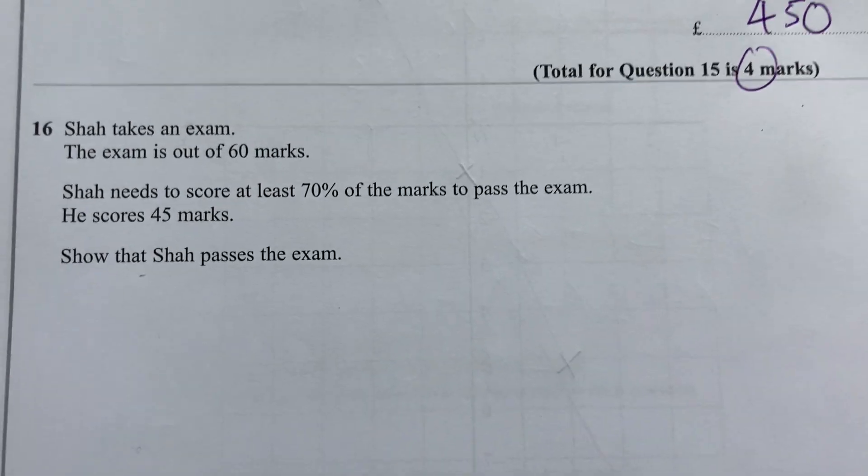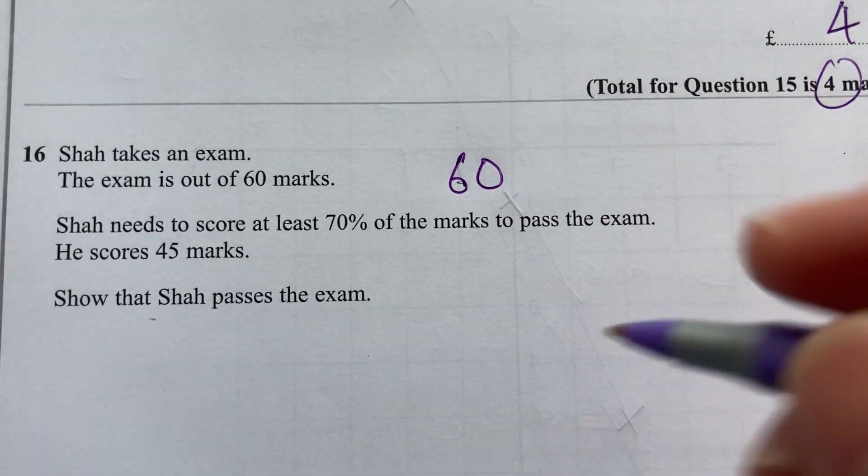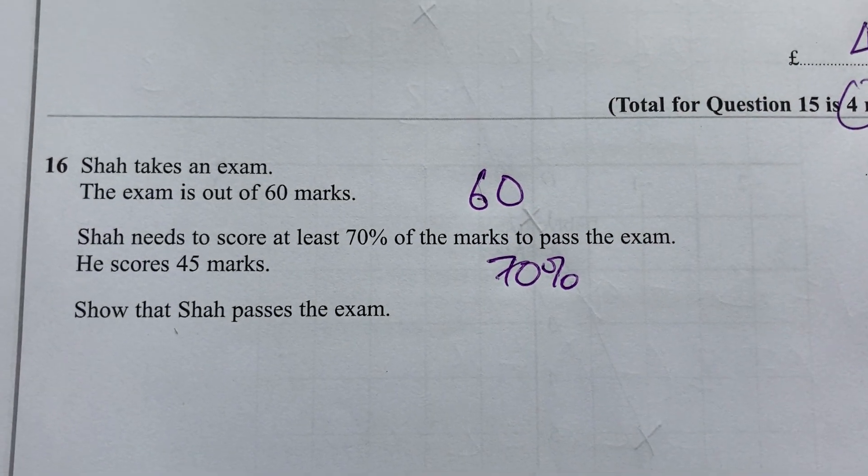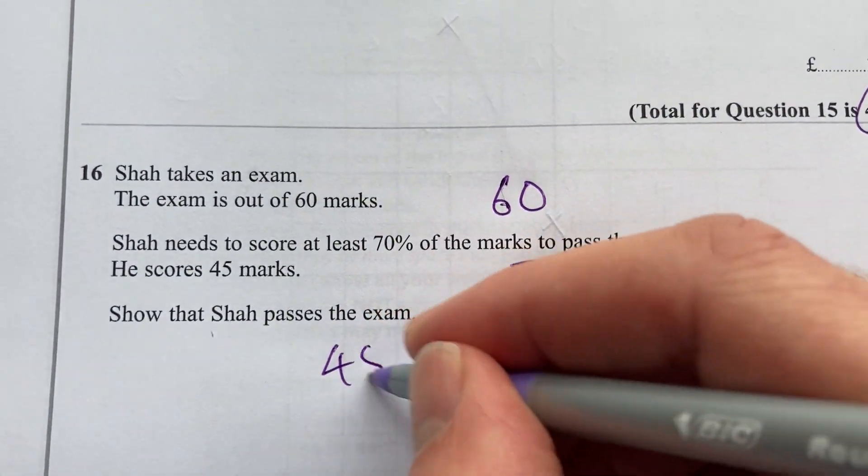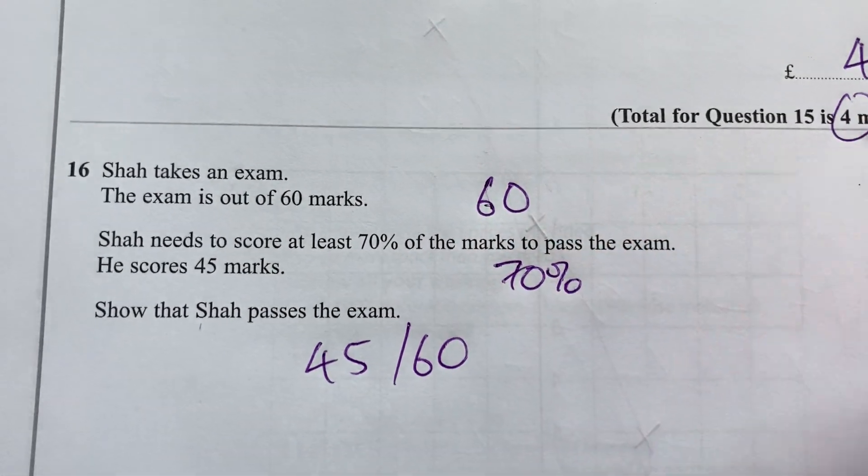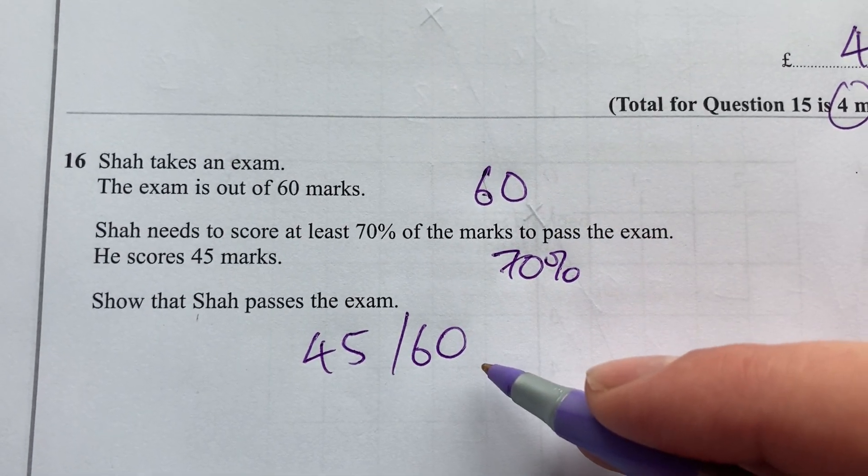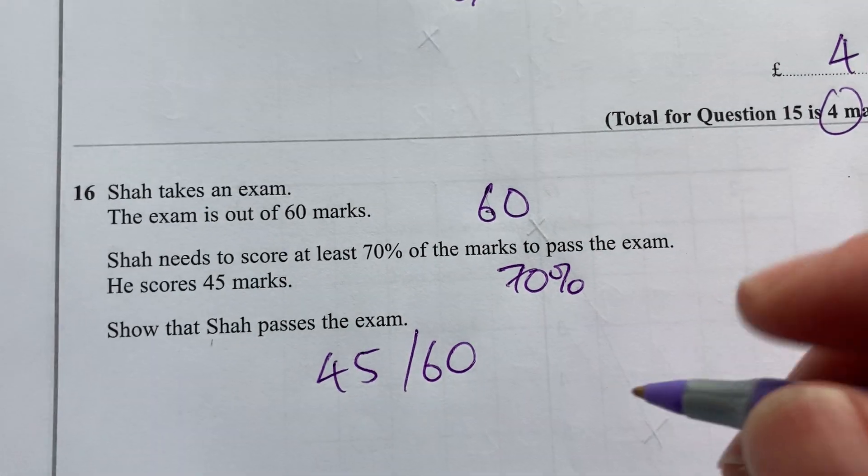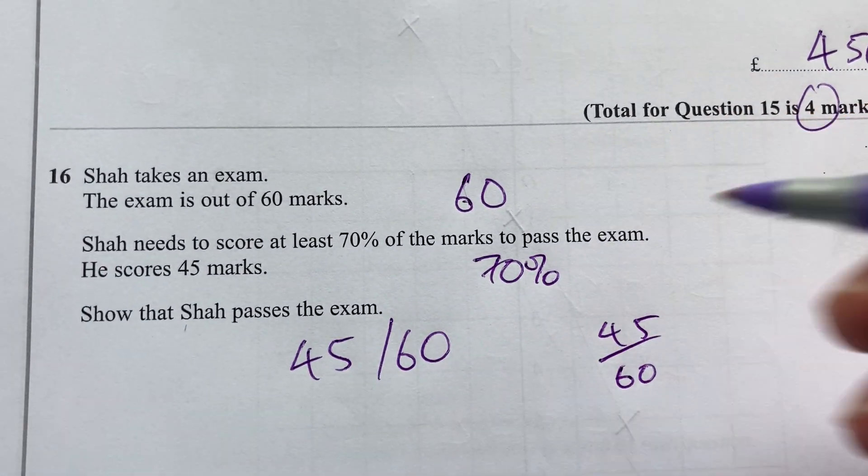Question 16. Shah takes an exam. The exam is out of 60. She needs to get at least 70% to pass the exam. Shah scores 45. So 45 out of 60. Well, if you think about it in terms of minutes, if you know 60 minutes is an hour, that's three quarters of an hour. And three quarters is more than 70%. So it should be fine.